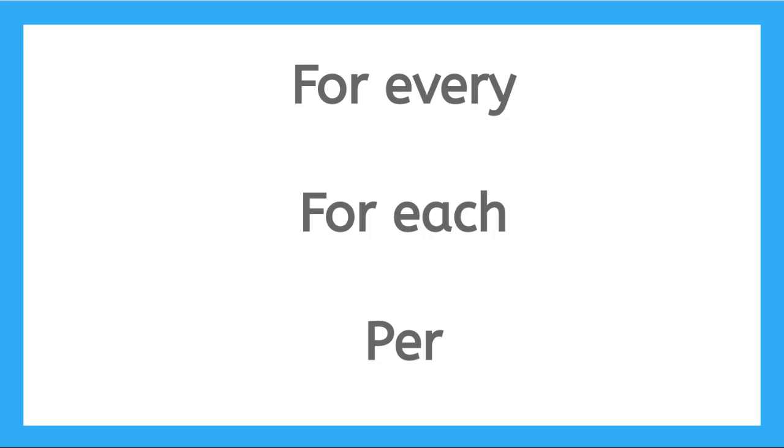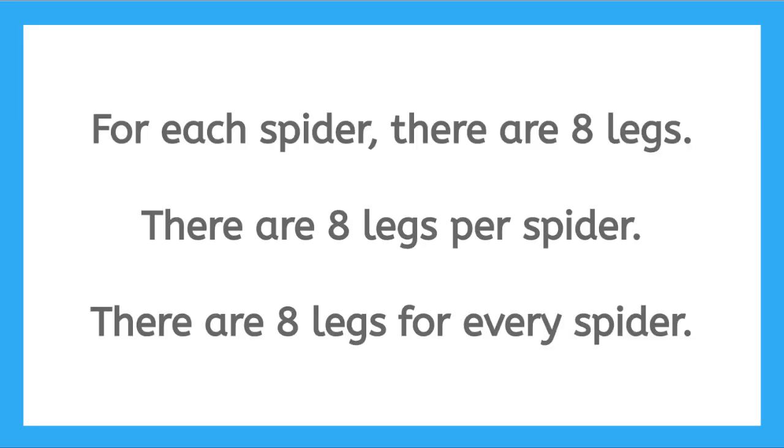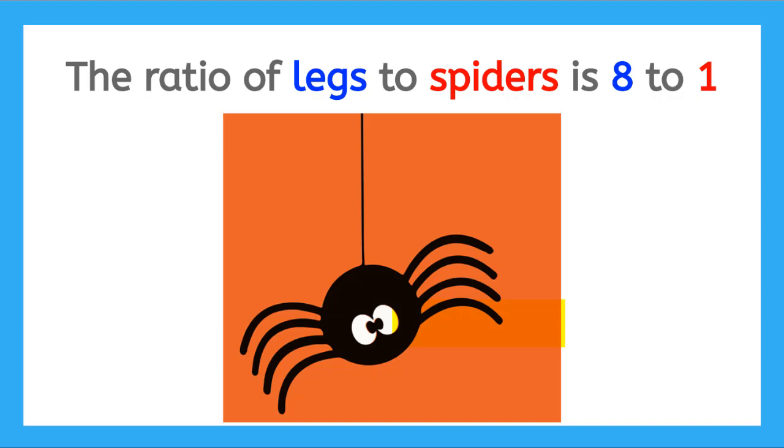Let's practice identifying ratios with these phrases. What do these phrases tell you about the ratio of legs to spiders? For each spider, there are eight legs. There are eight legs per spider. There are eight legs for every spider. The ratio is eight to one.